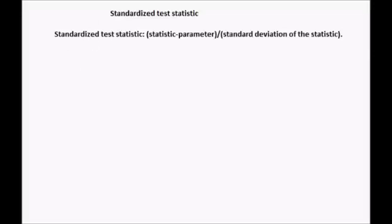So this is the general form. The two particular forms you are likely to come across: the first is the z score. Our statistic is x bar, the parameter is mu of 0, and the standard deviation for this particular statistic is going to be sigma divided by the square root of n.